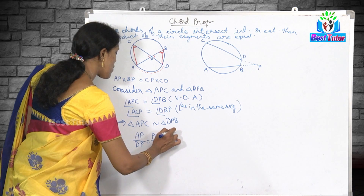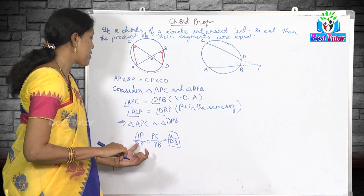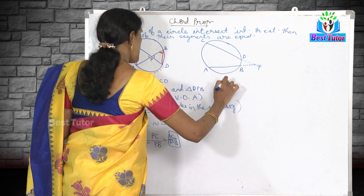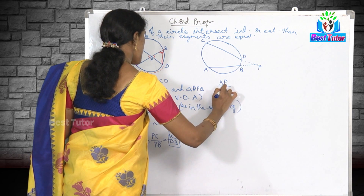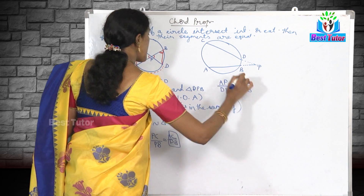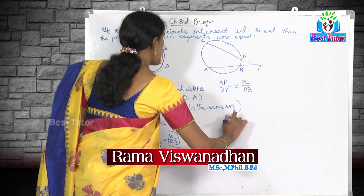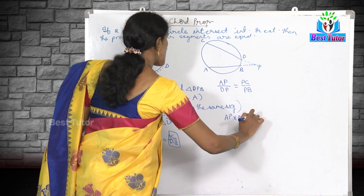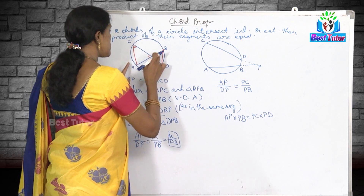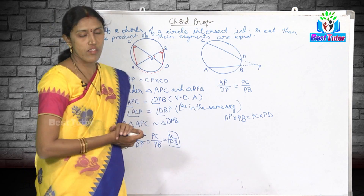Ignoring the third ratio, we get AP/DP = PC/PB. Since these two fractions are equal, we can cross multiply: AP × PB = PC × PD, which means AP × BP = DP × CP. That is what is to be proved. The first case is done.